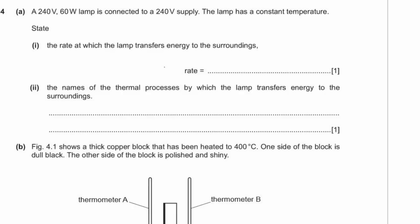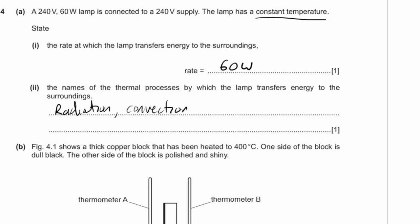Question four: a 240-volt 60-watt lamp is connected to a 240-volt supply at constant temperature. The rate at which the lamp transfers energy to the surroundings is 60 watts — because at constant temperature, energy in must equal energy out. The thermal processes by which the lamp transfers energy are radiation (as light energy) and convection, as the surrounding air forms convection currents.